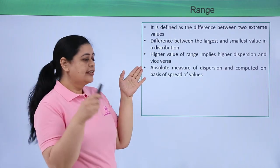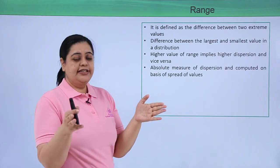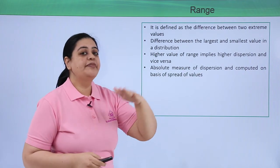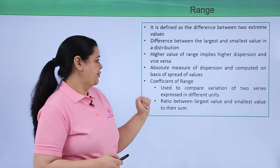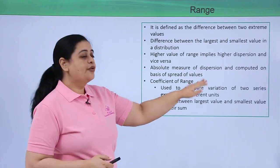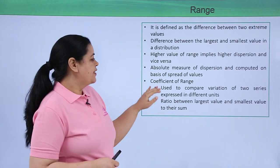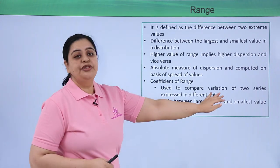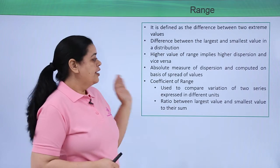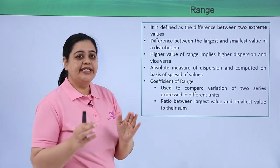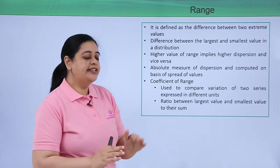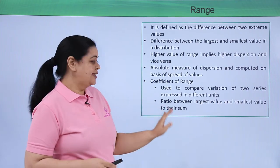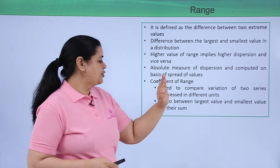Range is an absolute measure of dispersion, computed on the basis of the spread of values. The coefficient of range, on the other hand, is a relative measure of dispersion, and it is used to compare the variation of two series expressed in different units.